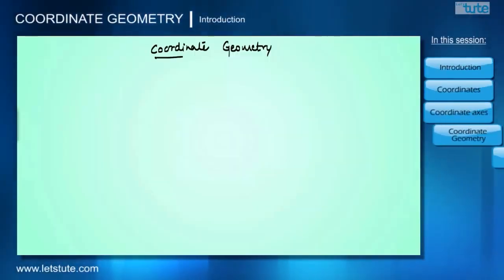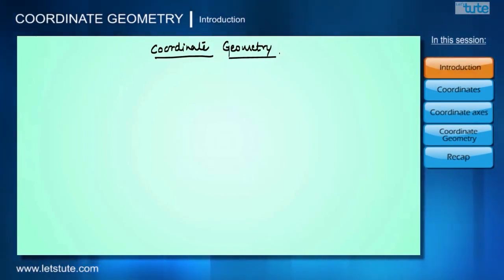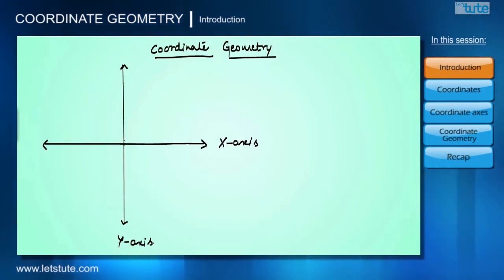Hello everyone, welcome to this session of coordinate geometry. In this session we are going to learn the basic concepts related to this topic. For understanding this, let's consider two axes: the horizontal axis is called X axis and the vertical axis is called the Y axis, and their point of intersection is called the origin.